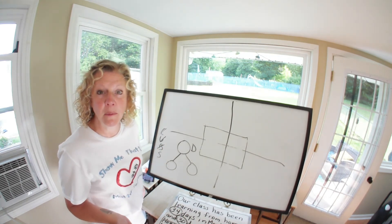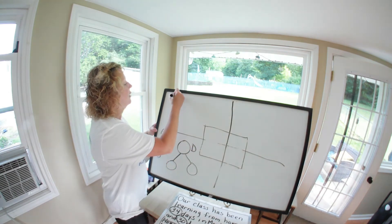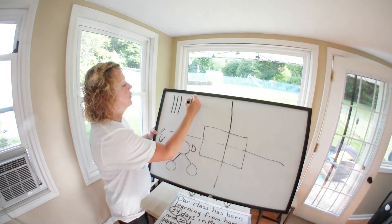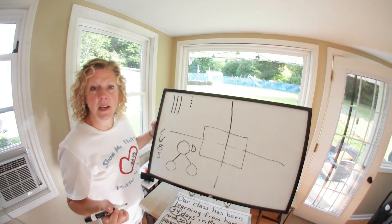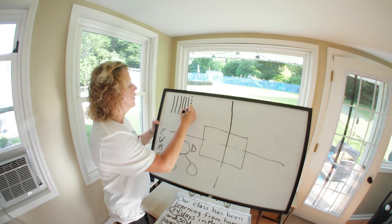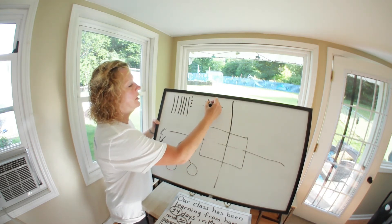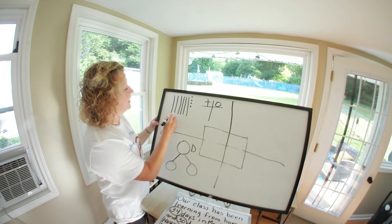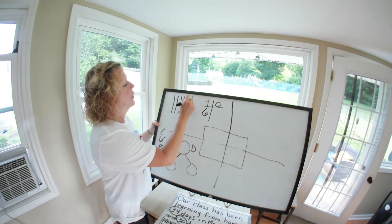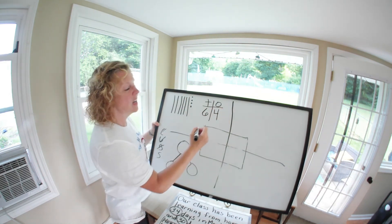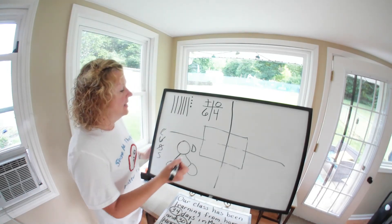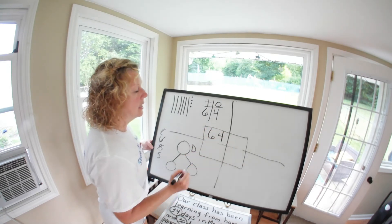Here we go. We've got 34: 10, 20, 30, 31, 32, 33, 34. Now we take the 30 days from the last two months: 10, 20, 30. Using our tens and ones frame: 10, 20, 30, 40, 50, 60 — we have six tens, and 1, 2, 3, 4 ones. We have been home learning for 64 days. Crazy, right?